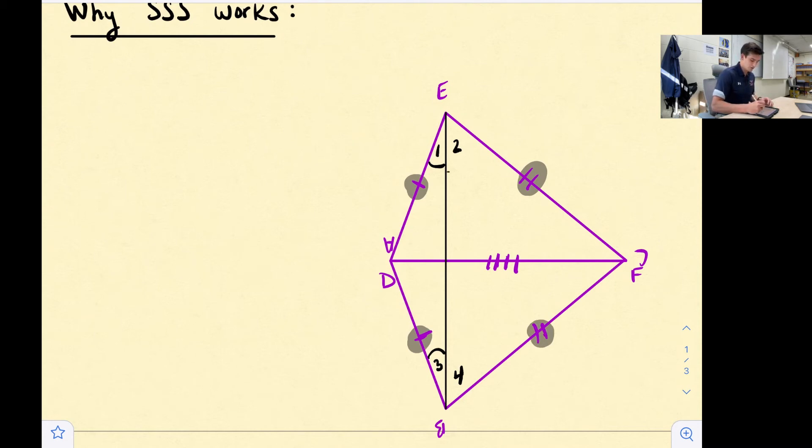So now also this is going to tell us angle 2 is congruent to angle 4. Now we can look at our angles and we can say, okay, how about this larger angle here? That would be like angle DEF. Well that's going to be equal to the measure of angle 1 plus the measure of angle 2.